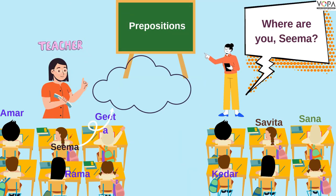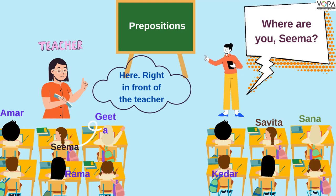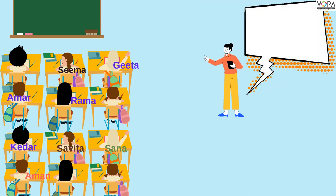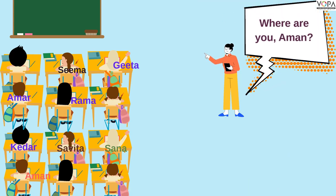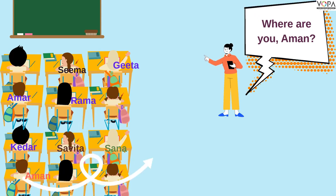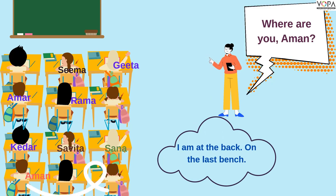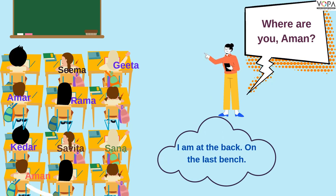Where are you, Seema? Here, right in front of the teacher. Where are you, Aman? Aman says: I am at the back, on the left of Kedar, on the last bench. On the last bench. Thank you, Aman.